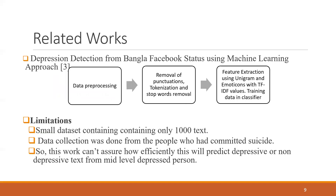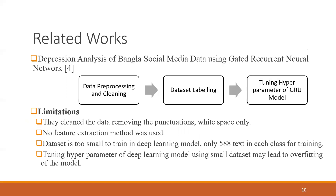In the third related work on depression detection from Bangla social media posts using machine learning, their dataset is very small — only 1,000 data points — and they collected data only from people who committed suicide, so it would not help people in mild depression. In the fourth related work, they did not apply punctuation removal or other preprocessing techniques, and their dataset is also very small at only 588 data points, which is insufficient for deep learning.